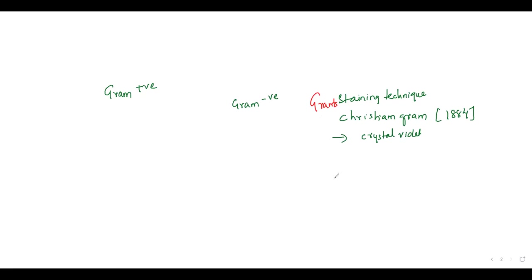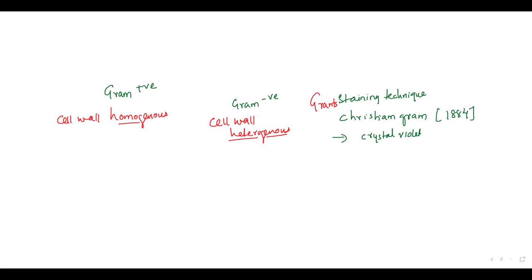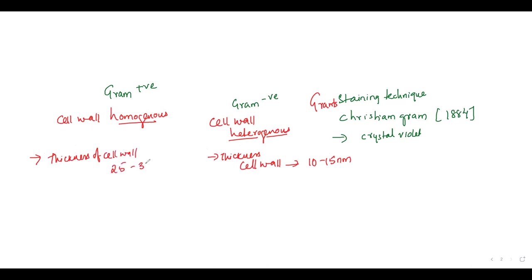Remember that both gram-negative and gram-positive bacteria are very different from each other. The gram-negative bacteria cell wall is very heterogeneous, but the cell wall of gram-positive bacteria is homogeneous — heterogeneous meaning made of several different components, homogeneous meaning similar components. The thickness of the gram-negative bacterial cell wall is only 10 to 15 nanometers, while in gram-positives the thickness of the cell wall is going to be about 25 to 30 nanometers — a huge difference.